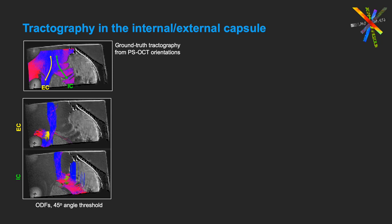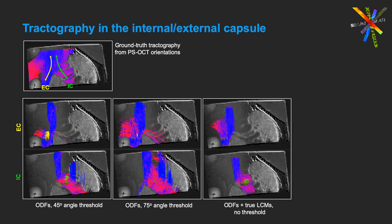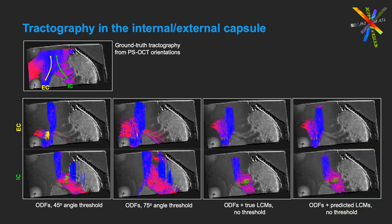This first result is from conventional ODF-based tractography with a 45 degree angle threshold. When we relax that threshold to 75 degrees, conventional tractography shows us more fibers going into the internal and external capsule, but it also shows us more of the false streamlines that take the wrong turn from the internal into the external capsule and vice versa. This is what we get when we use the ground truth LCM from the optical data to choose which ODF peak to follow at each voxel. Here we have not used any angle threshold at all, allowing the tractography to take as sharp turns as it likes. Despite that, we do not see any of those wrong turns. This is what we get when instead of the ground truth LCM from the optical data, we use the LCM predicted from the diffusion data. The results are quite similar to when we use the ground truth LCMs.